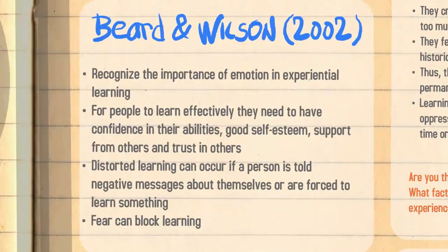Beard and Wilson stated that they recognize the importance of emotion in experiential learning. For people to learn effectively they need to have confidence in their abilities, good self-esteem, support from others and trust in others. Distorted learning can occur if a person is told negative messages about themselves, forced to learn something, or becomes in a state of learned helplessness because their technology is not working. The challenge is to keep asking for help, finding resources and finding ways to work through, because fear can really block learning.